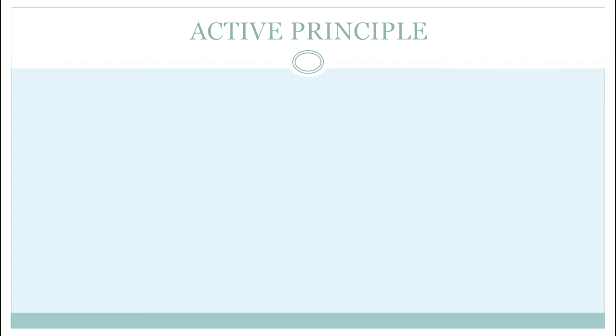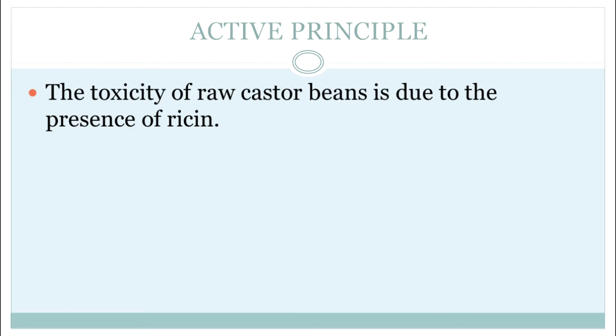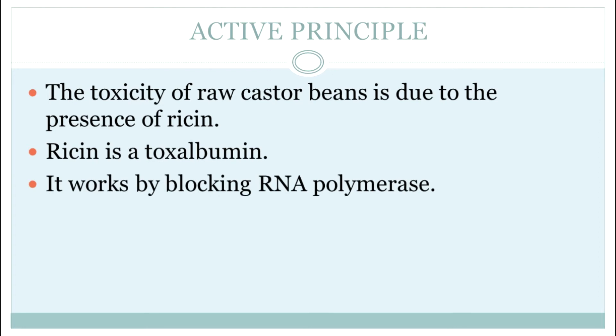If we talk about the active principle of Ricinus communis, the toxicity of raw castor bean is due to the presence of ricin. So the active principle is ricin. It is a toxalbumin. Abrus precatorius also had an active principle called abrin, which was also a toxalbumin. Toxalbumins are basically toxic proteins that disable the functioning of ribosomes. Once ribosomes are disabled, there will be no protein production and cellular activities will stop. Ricin works by blocking the RNA polymerase enzyme, which leads to stoppage of ribosome functioning and hence no protein is formed.